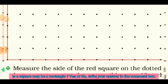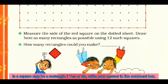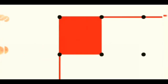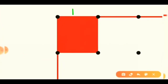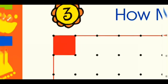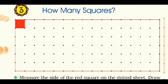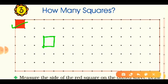Now come to the question: measure the side of the red square, then on the dotted sheet draw as many rectangles as possible using 12 such squares. Two tasks are given: first, measure the length of this red box — it may be one centimeter or two centimeters, check using a ruler. Second, make a rectangle using 12 squares. To begin, make one square by joining four dots, just like the red box.